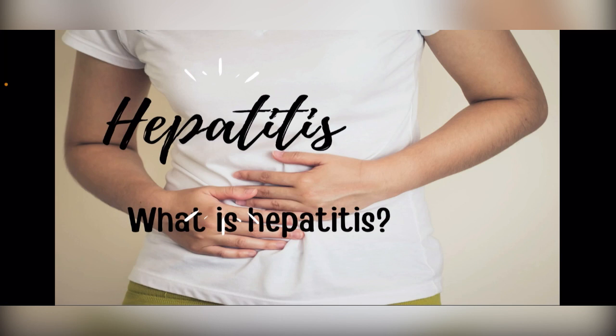Causes of hepatitis: Hepatitis A — exposure to the virus in food and water. Hepatitis B — contact with hepatitis B in body fluids such as blood, vaginal secretions, and semen. Hepatitis C — same, contact with bodily fluids including vaginal secretions and semen. Hepatitis D — contact with blood containing the hepatitis B virus. Hepatitis E — from contaminated food and water.